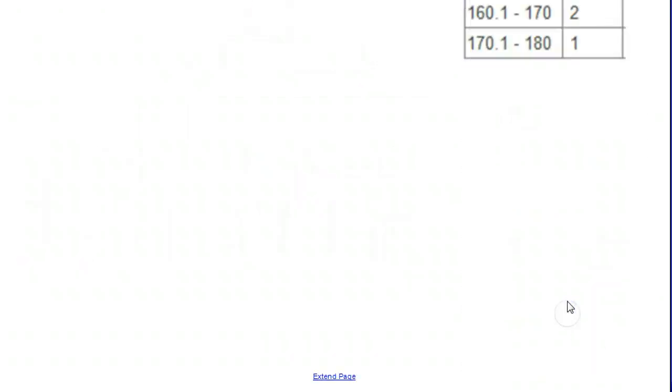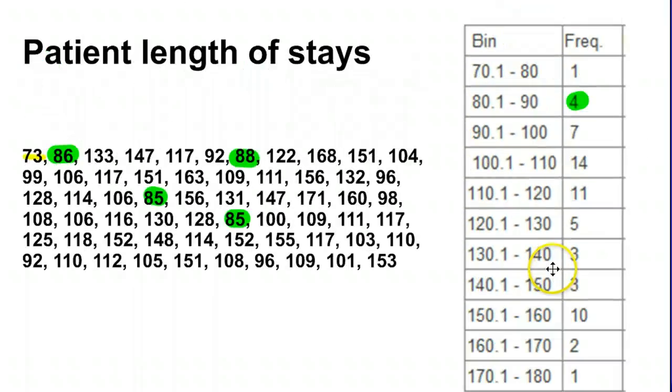The most important thing when you're doing histograms or when you're reading a histogram is knowing that all bins are the same size. Some bins have more things inside of it. This first bin only had one thing. There's four numbers here. There's 14 numbers in the 100 to 110 bin, but each bin is exactly a width of 10. So that's the most important thing.